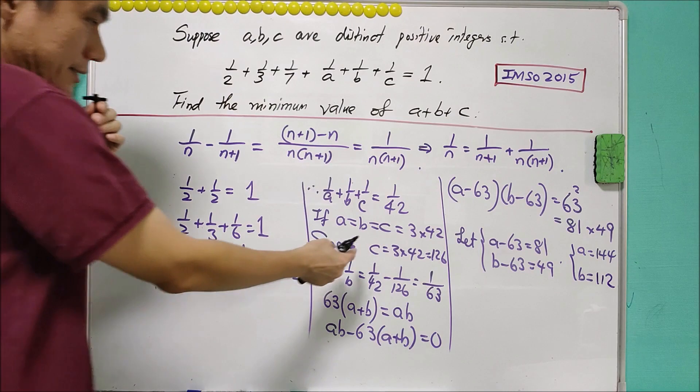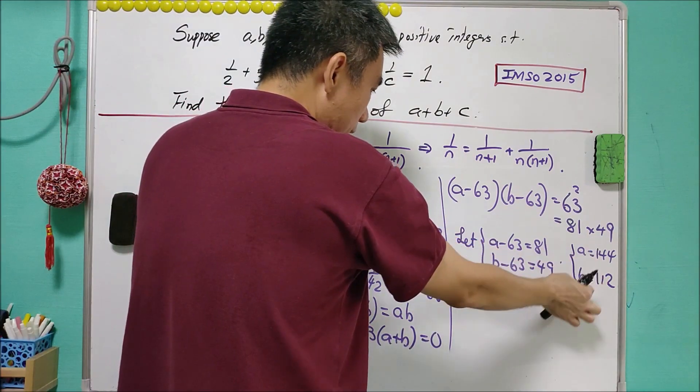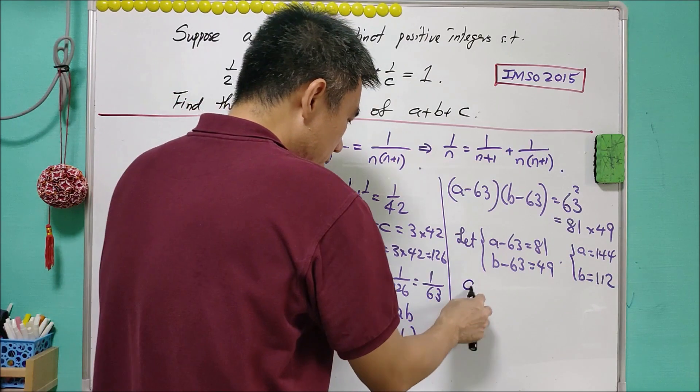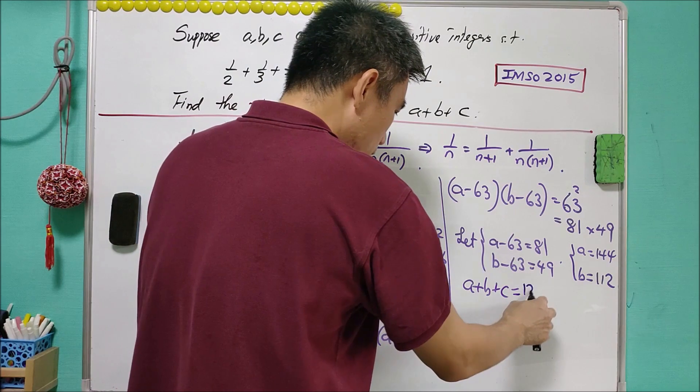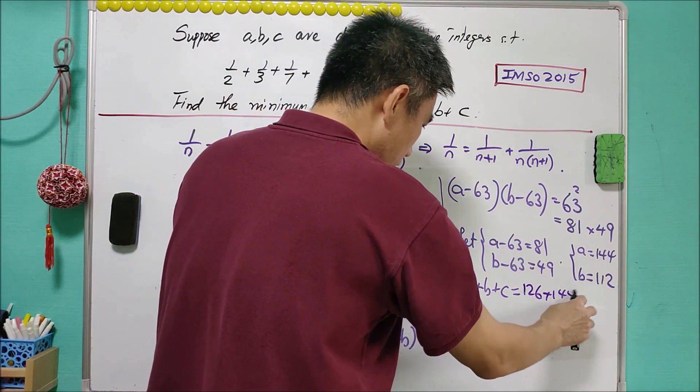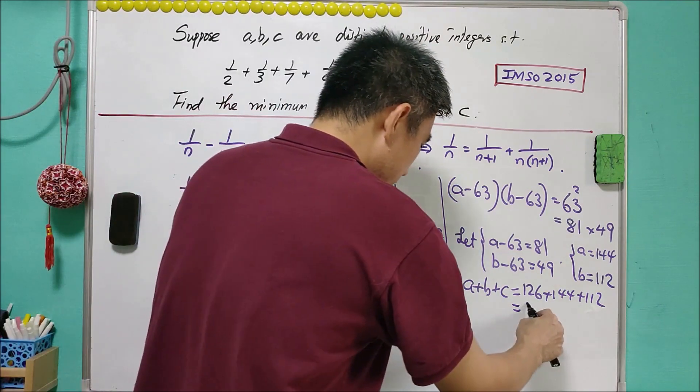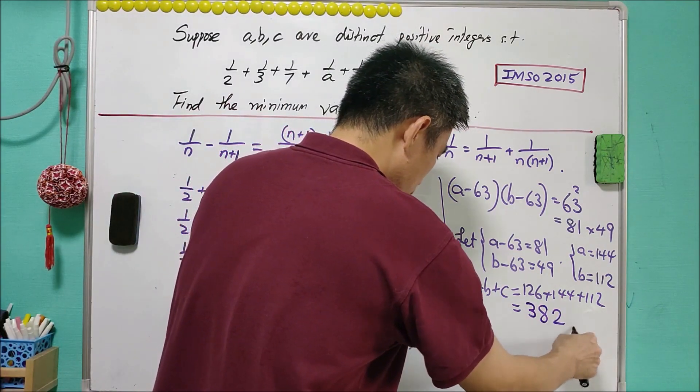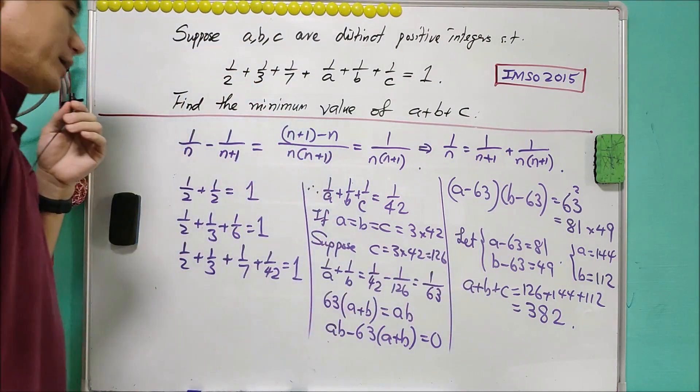With the assumption that C equals to 126, then we will have A and B as such. So in this case, A plus B plus C will be equal to 126, 144, and 112. And in this case, this is 382.